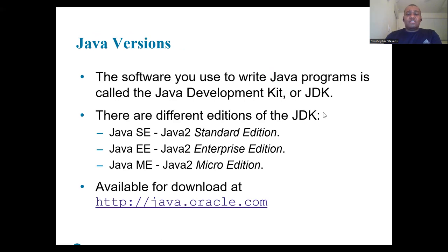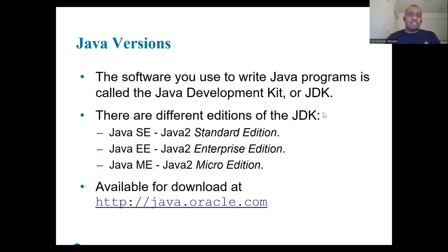The software used to write Java programs is the Java Development Kit, or JDK, and it's available in different editions: Java SE, which is the Standard Edition; Java EE, which is the Enterprise Edition; and Java ME, which is the Micro Edition.